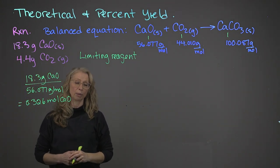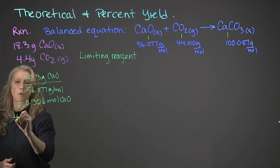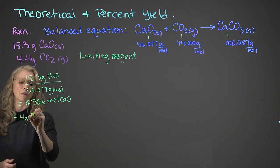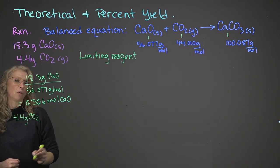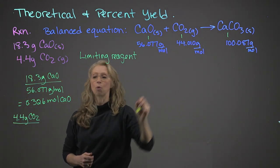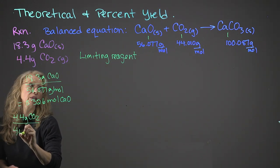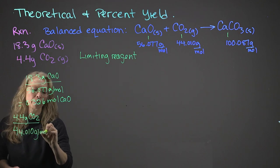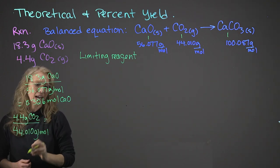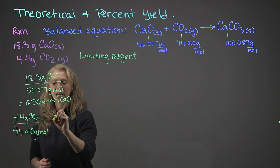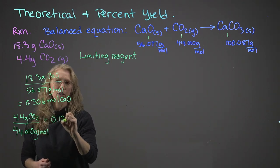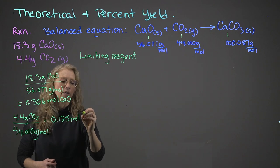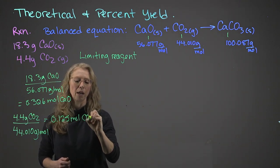Now we go to the carbon dioxide. We have 4.4 grams of carbon dioxide. We will divide it by its molar mass of 44.010 grams per mole. And we'll calculate that out, and we will see that we get 0.125 moles of carbon dioxide.